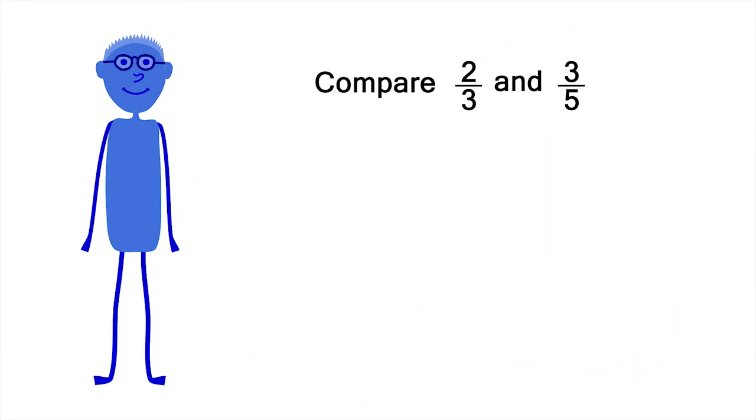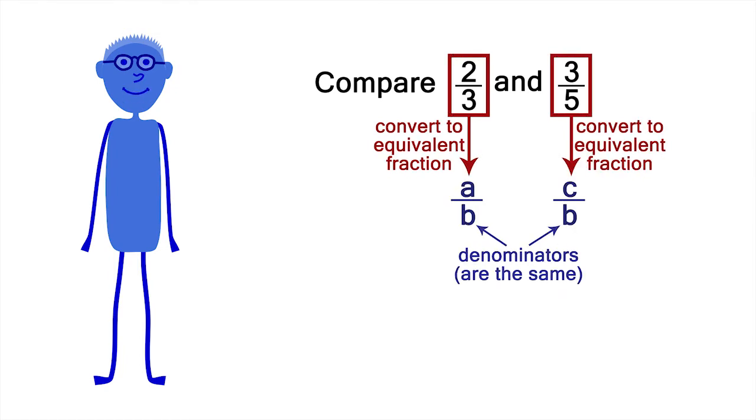If we don't have access to a fraction wall, then we have to find a different way of comparing two-thirds and three-fifths. This can be done by converting each fraction to an equivalent fraction, each of which has a common denominator.